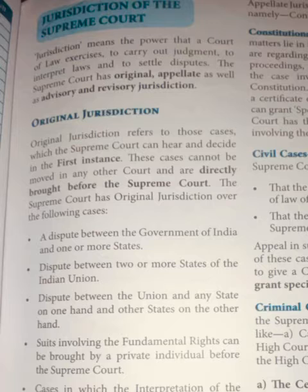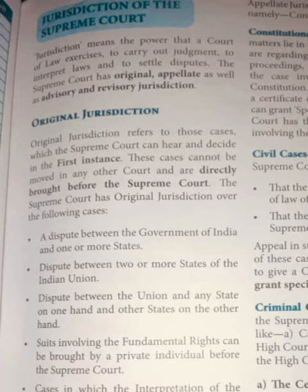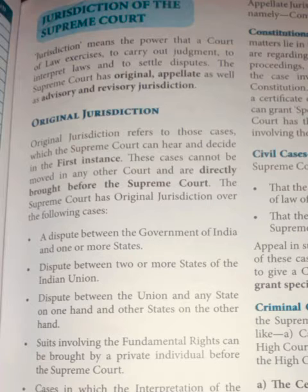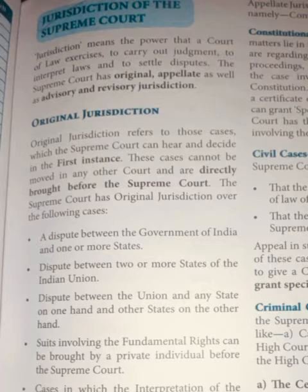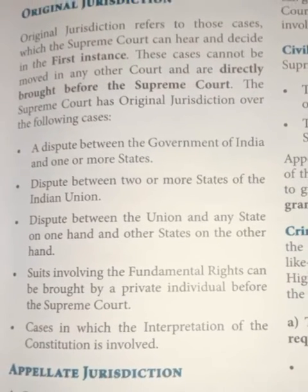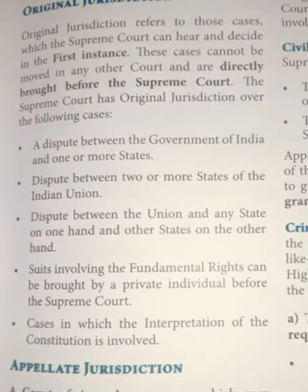Jurisdiction of the Supreme Court. Original jurisdiction: Jurisdiction means the power that a court of law exercises to carry out judgment, to interpret law, and to settle disputes. The Supreme Court has original, appellate, as well as advisory and revisory jurisdiction. Original jurisdiction means those cases that go directly to the Supreme Court for the first time.